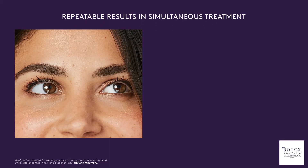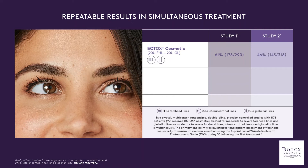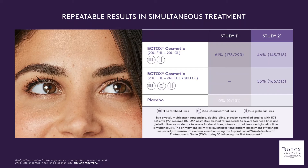For the simultaneous treatment of moderate to severe forehead lines and glabellar lines, 178 of 290 (61%) and 145 of 318 (46%) of patients, respectively, achieved at least a 2-grade improvement from baseline. For the simultaneous treatment of moderate to severe forehead lines, glabellar lines, and lateral canthal lines, 166 of 313 (53%) of patients achieved at least a 2-grade improvement from baseline. Out of the two placebo groups, not one patient in Study 1 and only 1 of 156 patients (1%) in Study 2 achieved at least a 2-grade improvement.